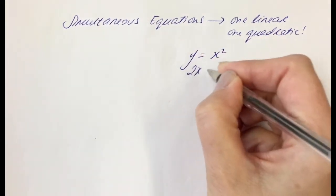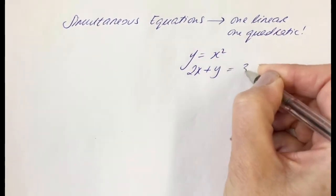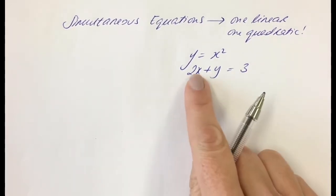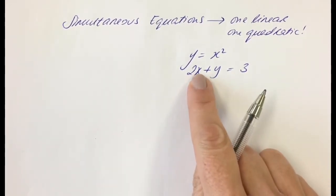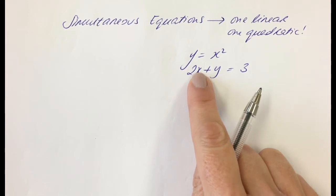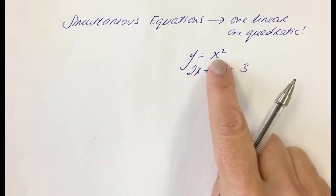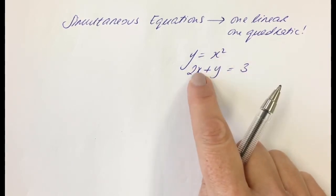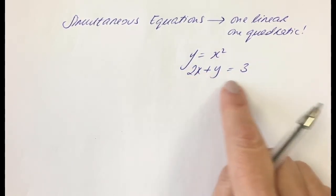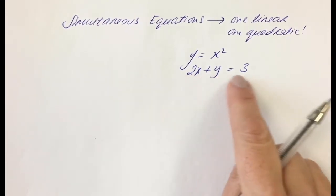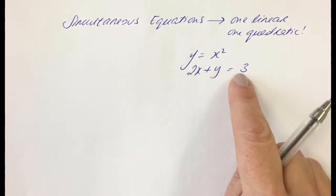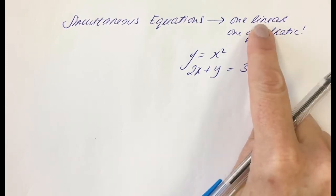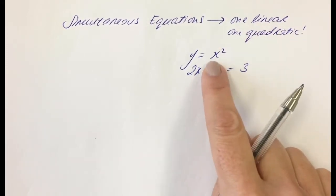We also have 2x plus y is equal to 3. This is our linear equation, because linear is when we have a power of 1. So we can see x is the power of 1 here, and x is the power of 2 in the quadratic. When it's the power of 1, it is linear - called linear because if we sketch it as a function, we get a straight line, hence linear.